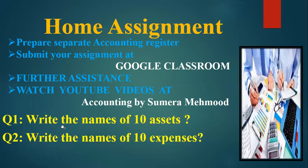Today's homework: write the names of 10 assets — examples include furniture, machinery, vehicle, your accounting book, Nestle bottle, sofas, tables — everything around you is an asset. Also write the names of 10 expenses — mobile expense, eating expenses, shopping expense, etc. Go through the lectures once again on YouTube, watch and revise, and get ready for a quiz.